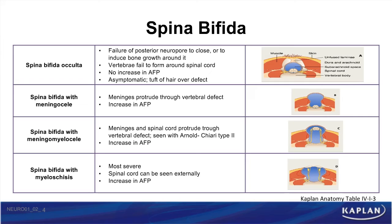The second type is spina bifida with meningocele. In this form, there is a failure of the vertebrae to form around the spinal cord, as well as a characteristic protrusion of the meninges through this vertebral defect. This form is associated with an increase in maternal alpha-fetoprotein levels. The next type is spina bifida with meningomyelocele, in which both the meninges and the spinal cord protrude through the vertebral defect. This form is also associated with an increase of maternal serum alpha-fetoprotein levels.